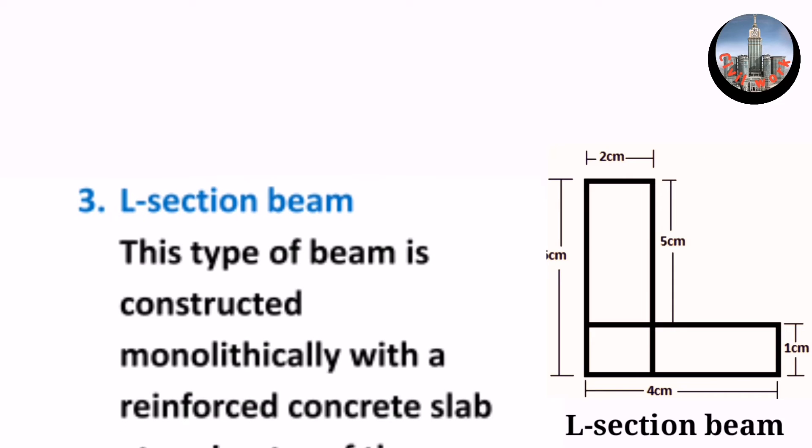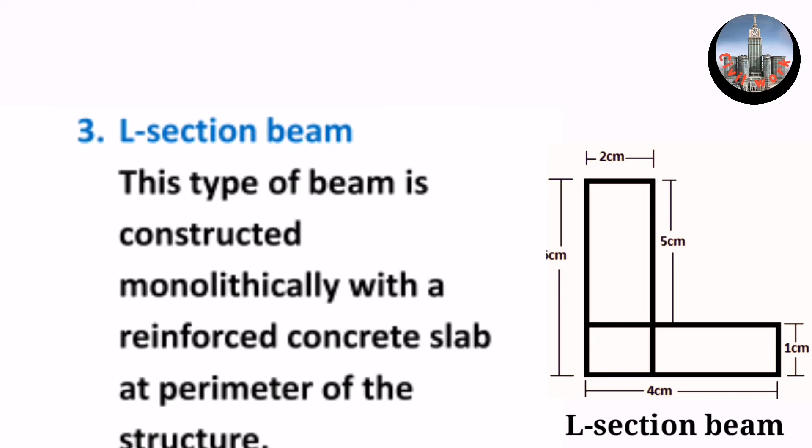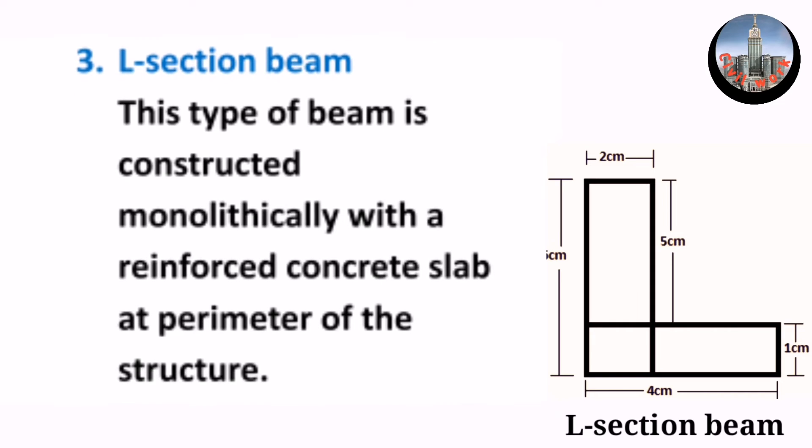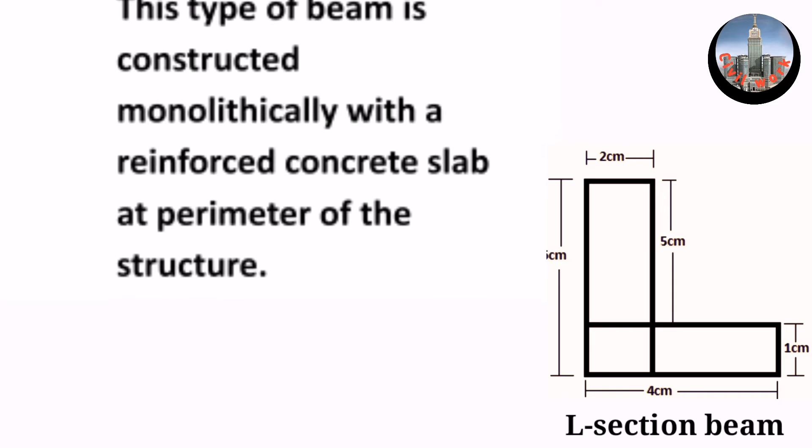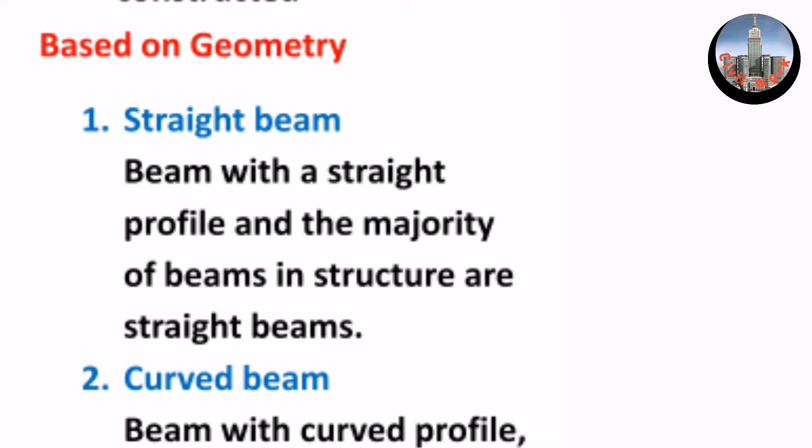3. L-section beam. This type of beam is constructed monolithically with a reinforced concrete slab at the perimeter of the structure.